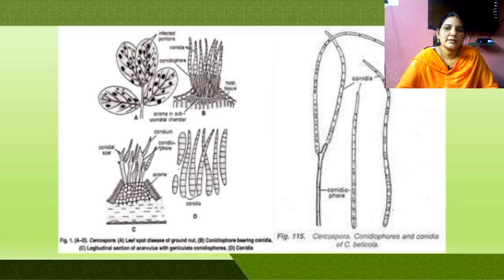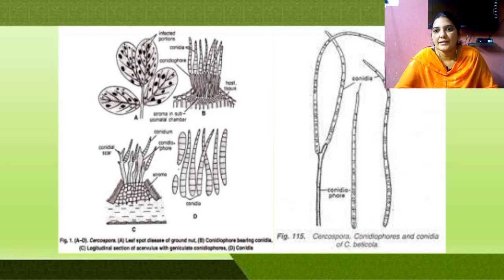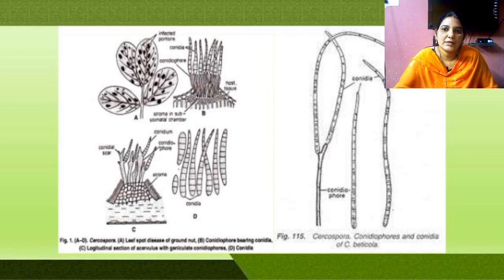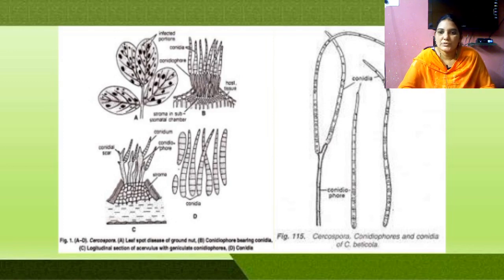The conidia enter into the air and search for another healthy plant. They enter into another healthy plant, form a germination tube, and produce mycelium.